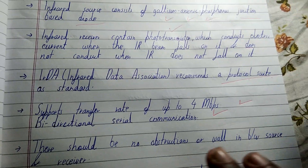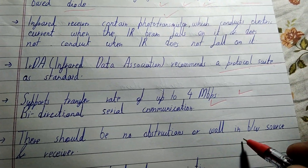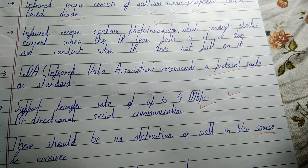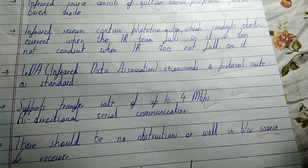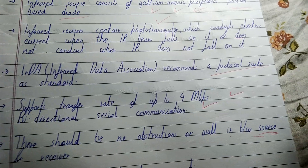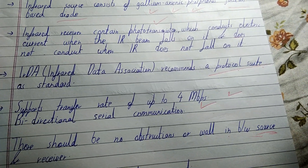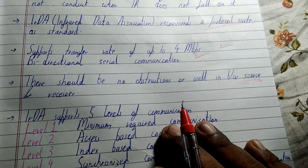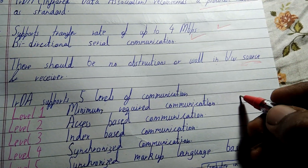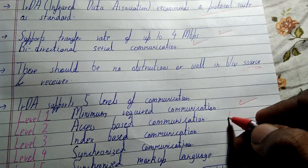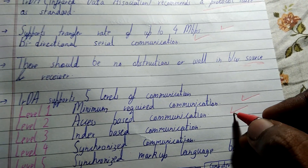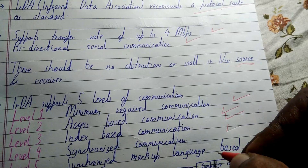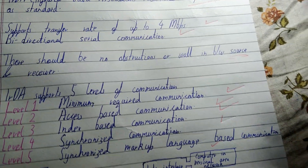There should be no obstruction or wall in between the source and receiver whenever you are sending or receiving data. IRDA has five levels of communication: the first level is minimum required communication, the second is access-to-access based communication, the third is index-based communication, the fourth is synchronized communication, and the fifth is synchronized markup language based communication.